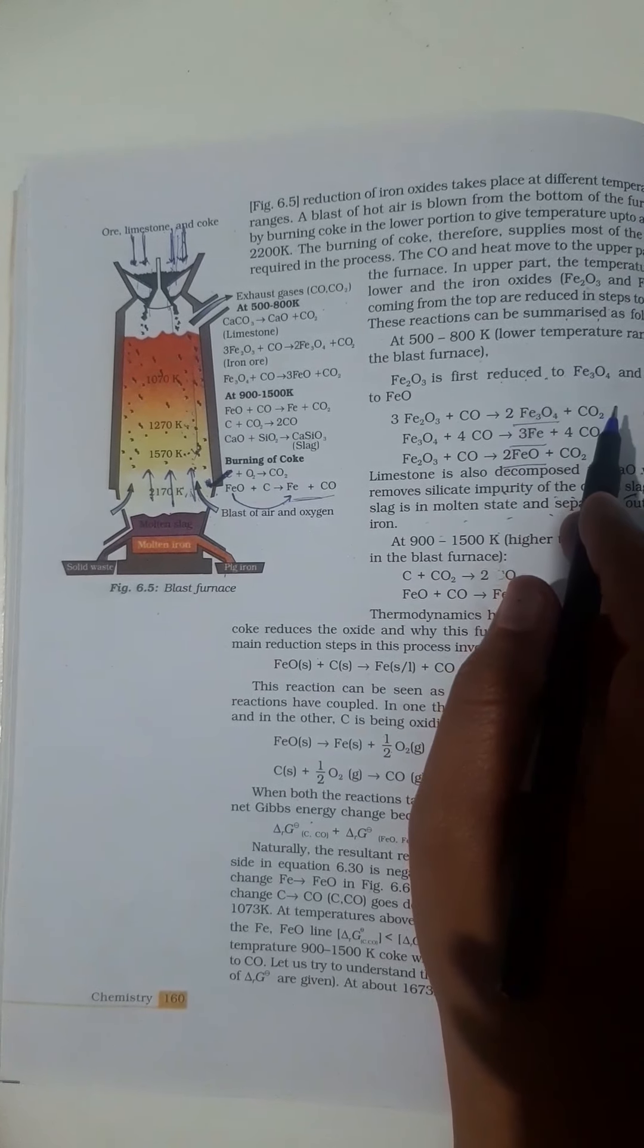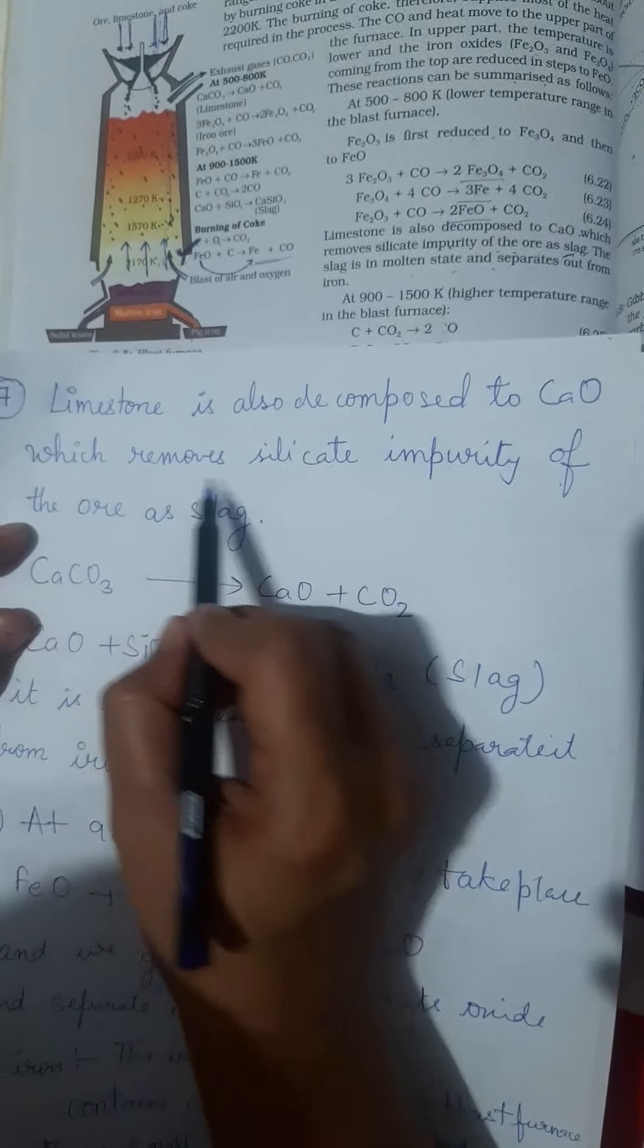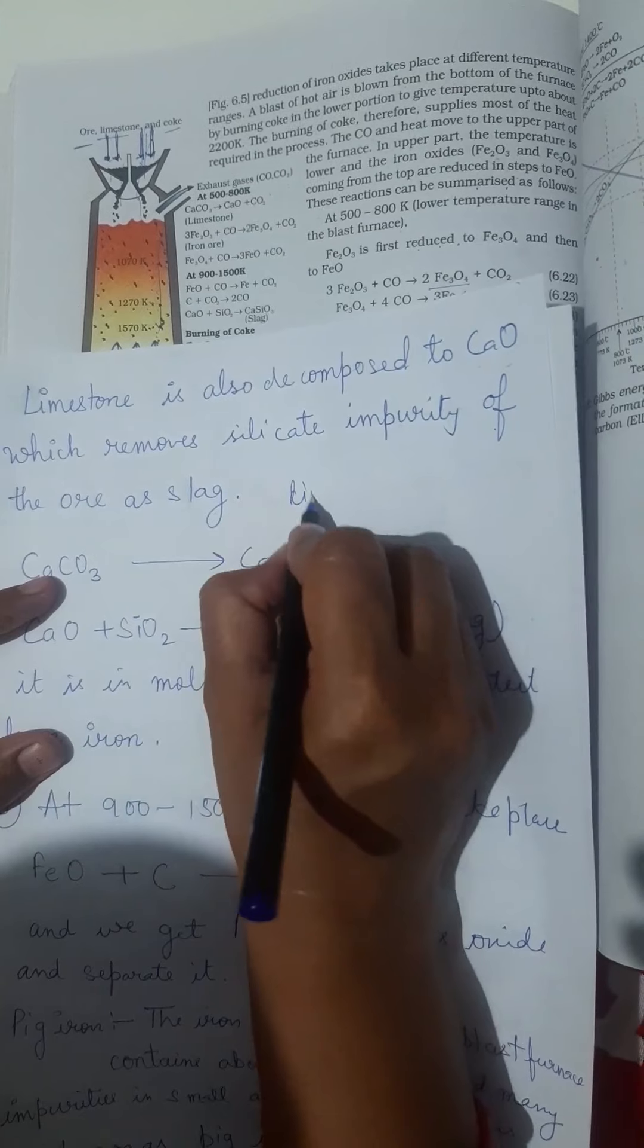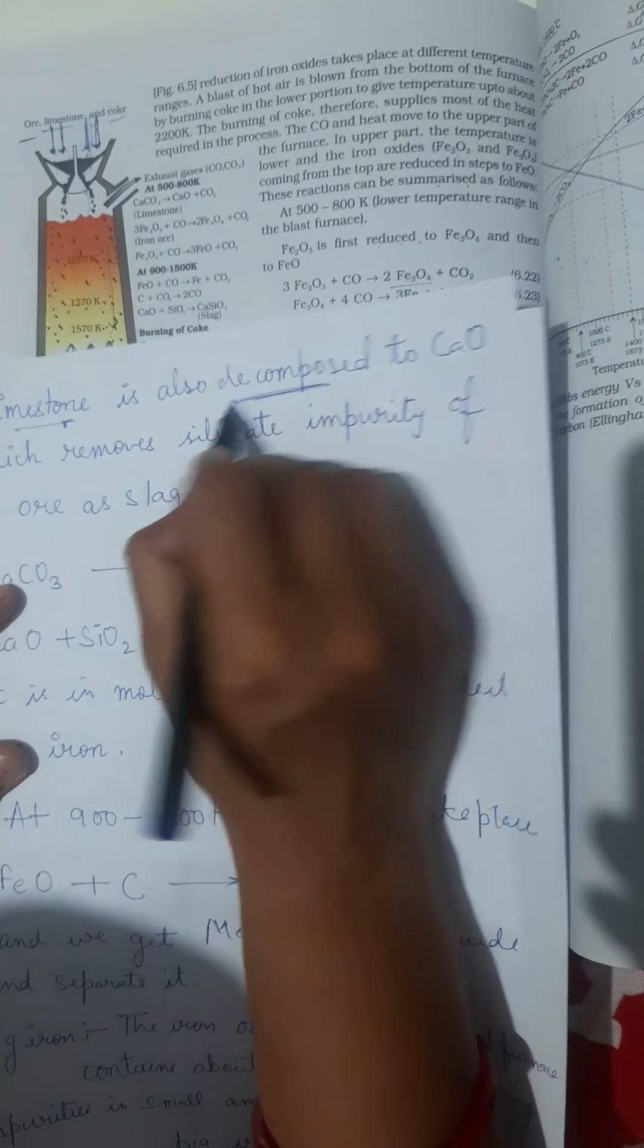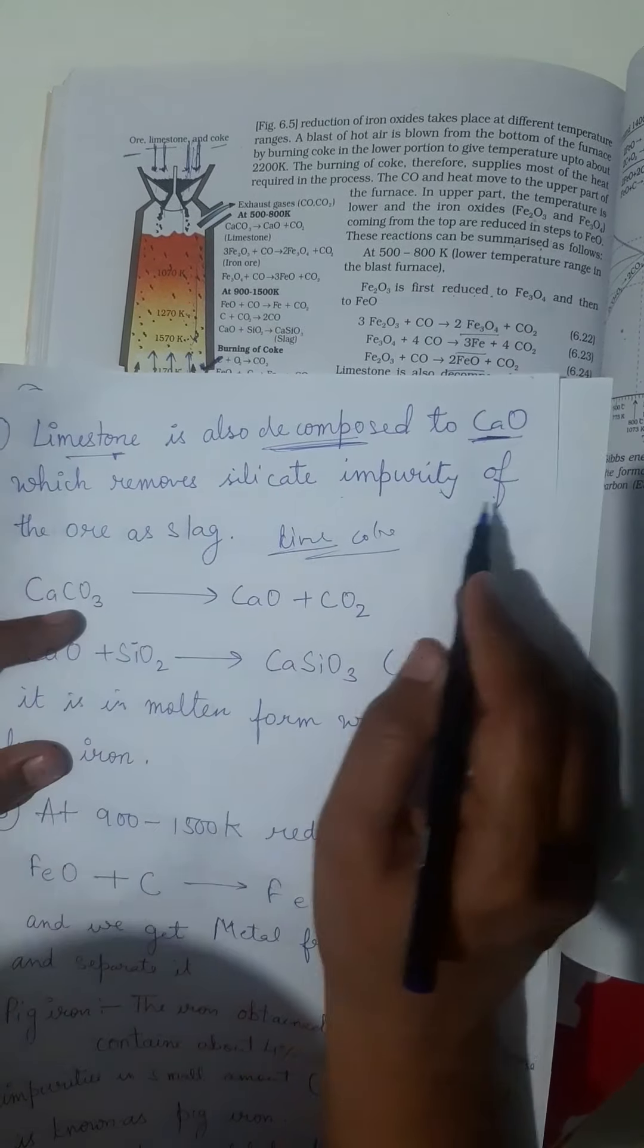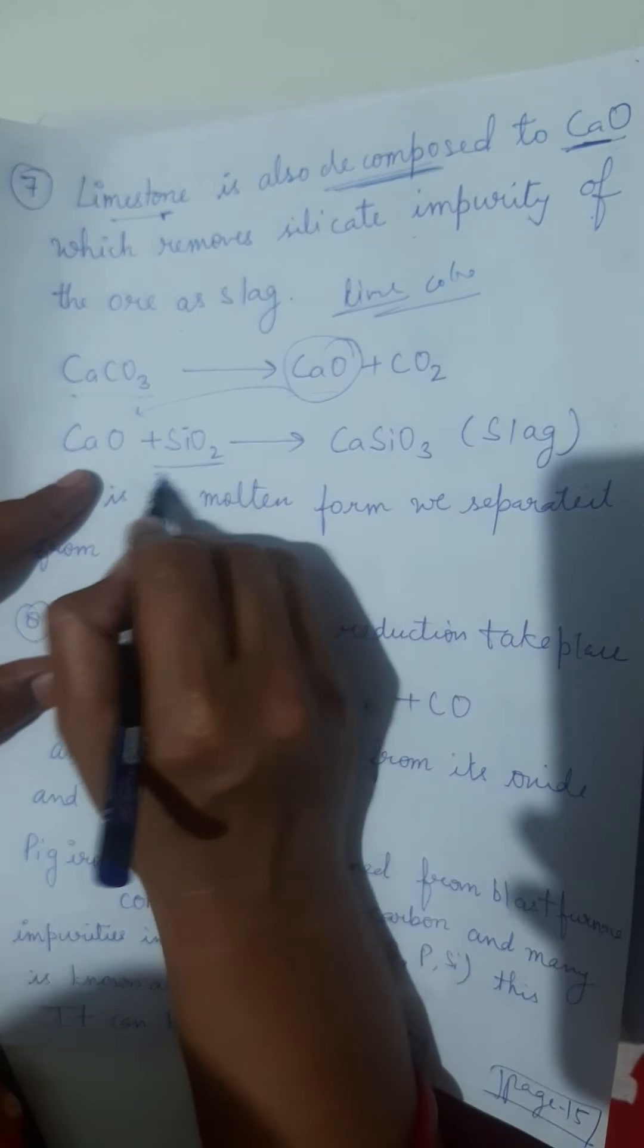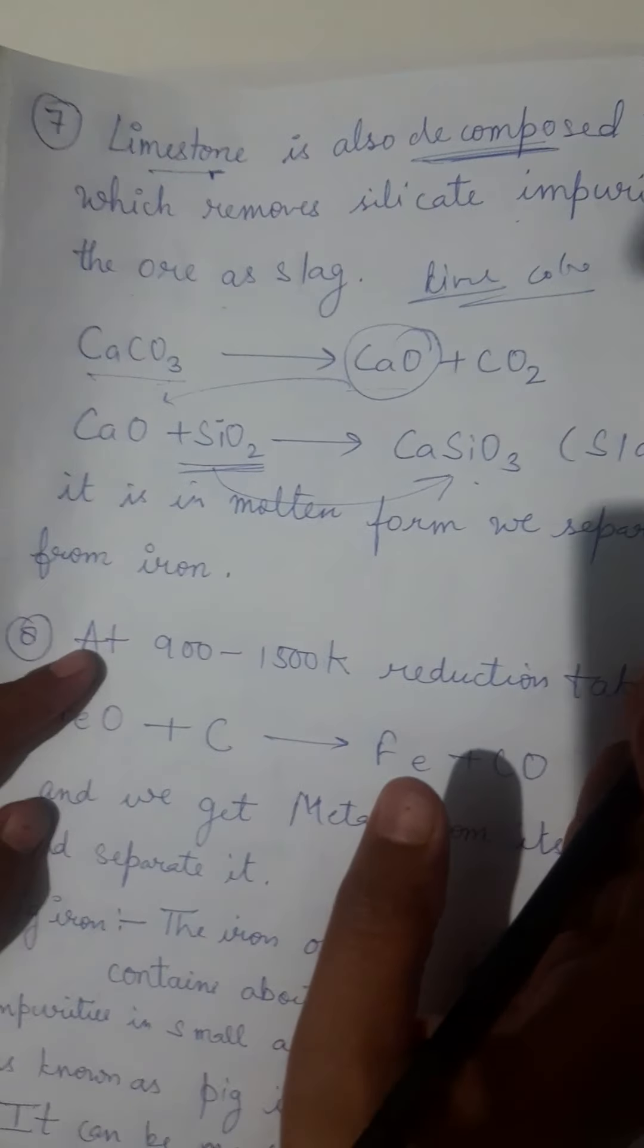Next point: limestone is also decomposed to calcium oxide which removes silicate impurities of the ore as slag. Limestone decomposes to form CaO which removes silicate impurities of ore. This CaO reacts with silicates and forms slag. This slag will be separated from this process.